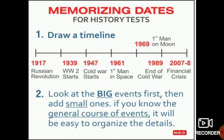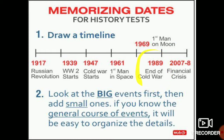For memorizing dates for a history test, you should first draw a timeline — which event took place first, then which after that — in chronological order. For example: 1917 Russian Revolution, 1939 World War II starts, 1947 Cold War starts, 1961 first man in space, 1969 first man on moon, 1989 end of Cold War, 2007–8 financial crisis. Learn the big events first, then the smaller ones. If you know the general course of events it is easy to organize and memorize the details.